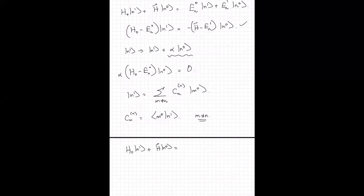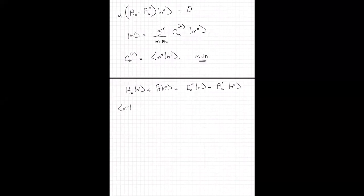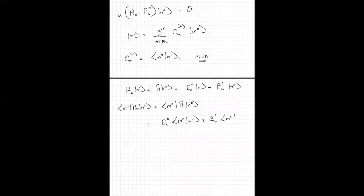To compute ⟨m0|n1⟩, assuming m is not equal to n, I'll go back to this equation and now take the overlap with ⟨m0|. So taking the bra ⟨m0| of the first-order equation gives: ⟨m0|H0|n1⟩ + ⟨m0|H-tilde|n0⟩ = EN0⟨m0|n1⟩ + EN1⟨m0|n0⟩.